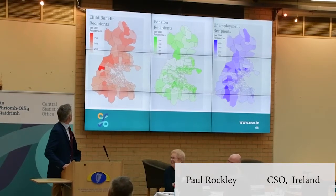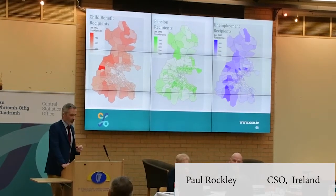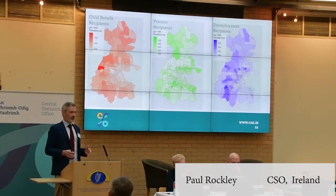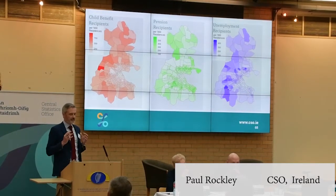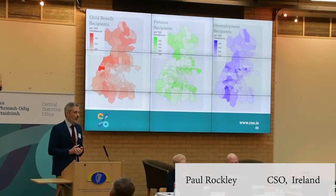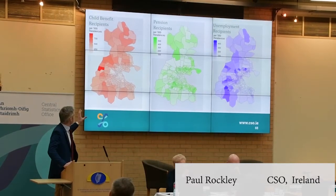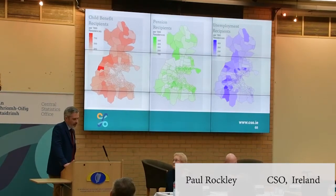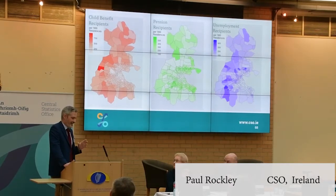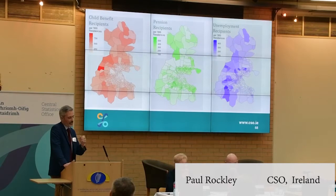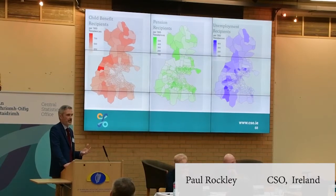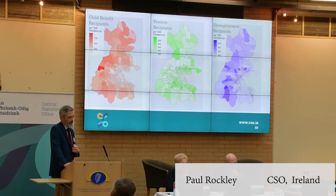We have actually compared these to the census and they tell a very similar story. With child benefit recipients, you would expect to have more families on the outskirts of the city, and that is borne out by the data. There's one ED which is very red — when I looked into that, it's Lucan North. It's a strongly rural area but there's one very big, very new estate, which we think might be part of the reason for why it is so red. New estates tend to have families with kids.